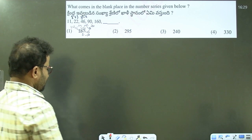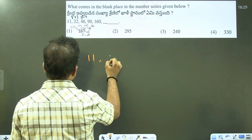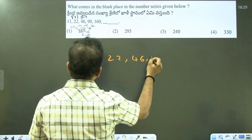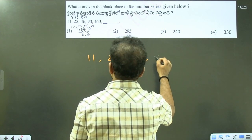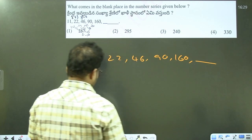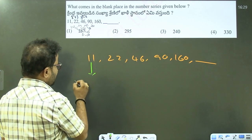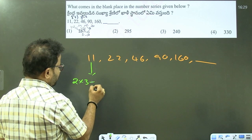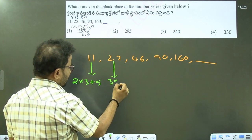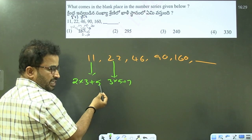Next question: the series is 22, 46, 90, 160, dash. The next one involves 2, 3, 0, 6 plus 5. Next which is 3 into 5 plus 7. Why is this so? 2, 3, 5 are prime numbers.